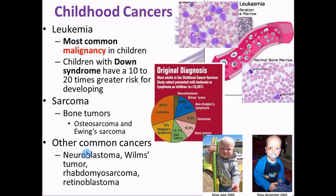Other common childhood cancers: neuroblastoma we already talked about. A Wilms tumor is a nephroblastoma — nephro referring to the kidney. Retinoblastoma we already discussed. Rhabdomyosarcoma — sarcoma tells you it's malignant connective tissue, and 'myo' tells you it's muscle. These are soft tissue cancers found in children, usually appearing as a lump. About 30 to 40% show in the head and neck region, and 20 to 25% in reproductive organs or the urinary tract.